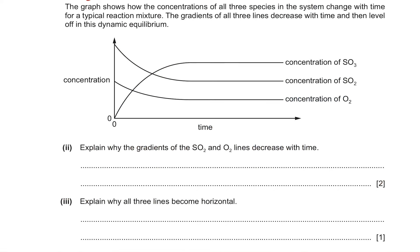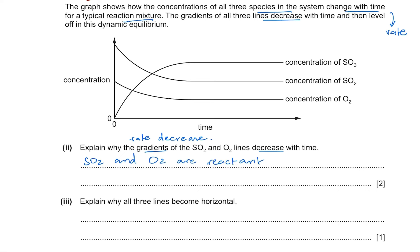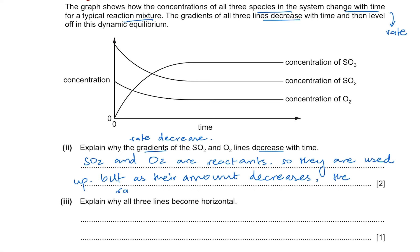The next question shows a graph of how the concentration of all three species change with time for a typical reaction mixture. The gradient of all three lines decreases with time and then levels off at dynamic equilibrium. The gradient refers to the rate, so the rate decreases. SO2 and O2 are reactants and are used up; their concentrations decrease, and as their amount decreases the rate also decreases because rate depends on the concentration of reactant particles.